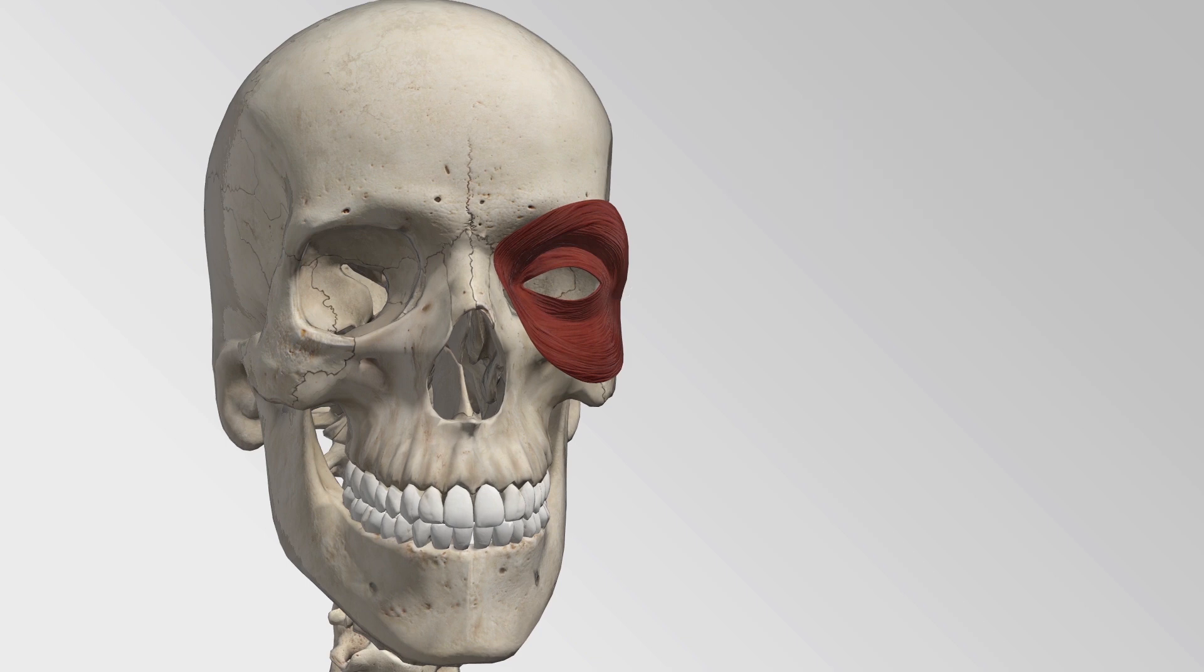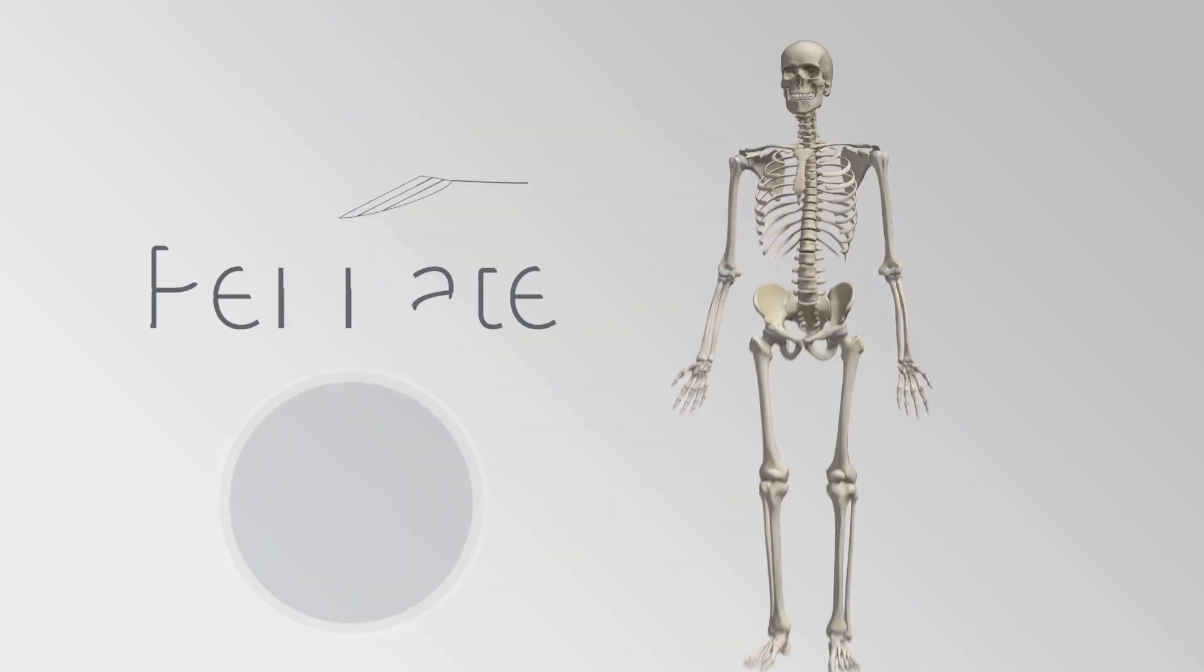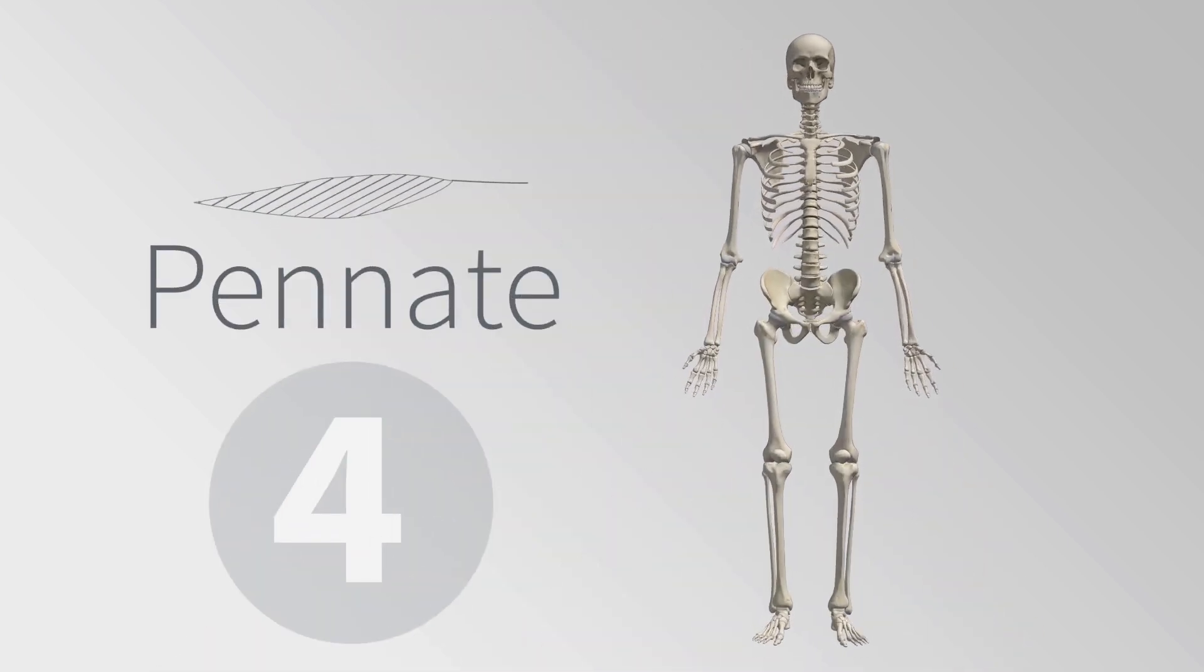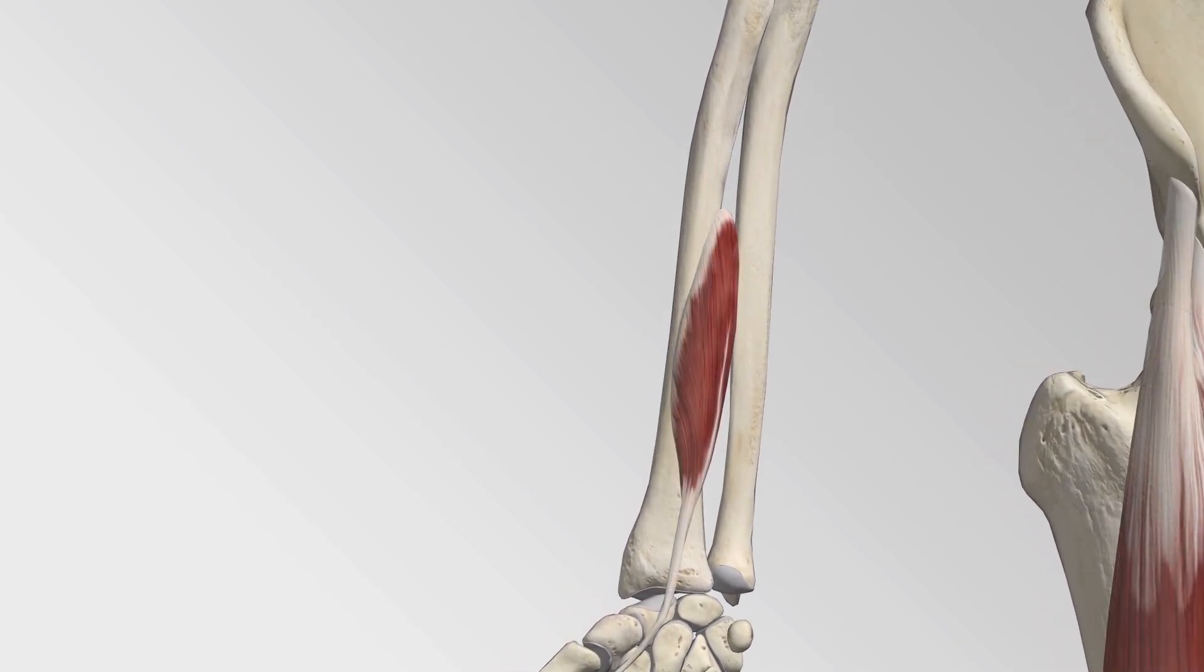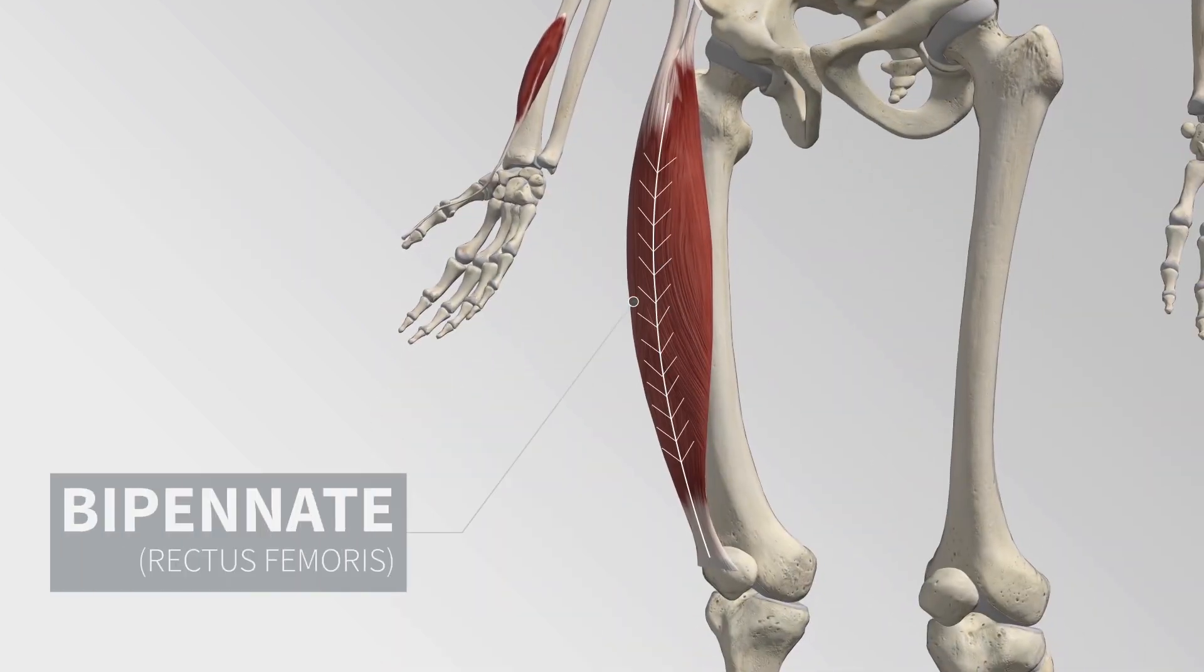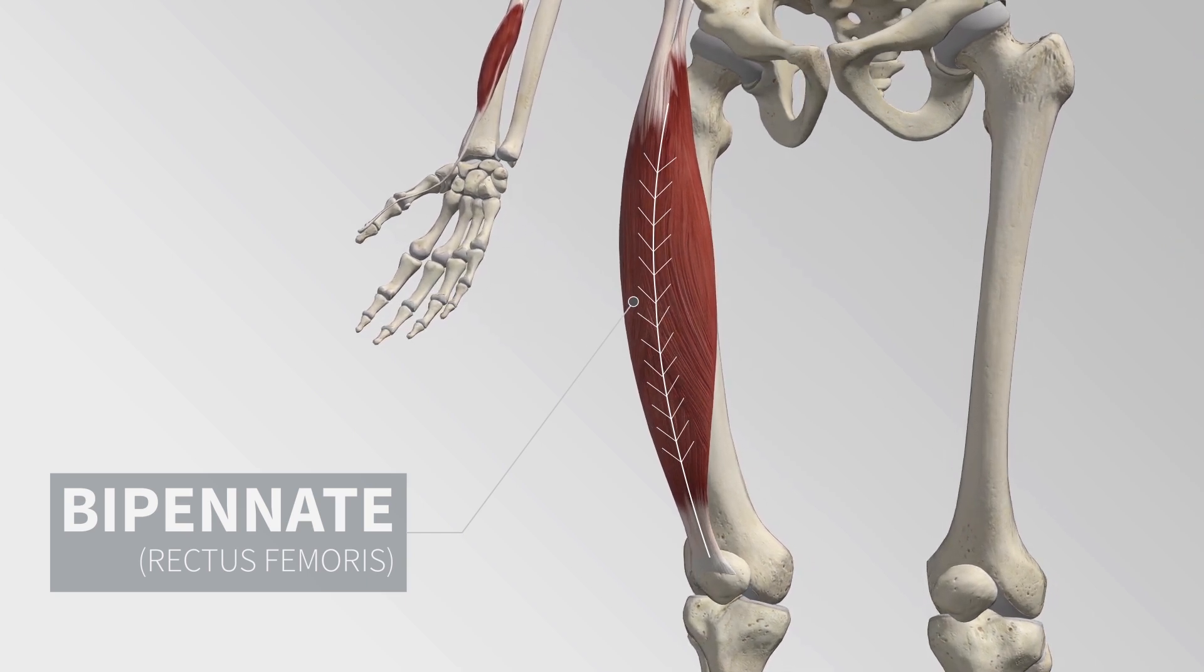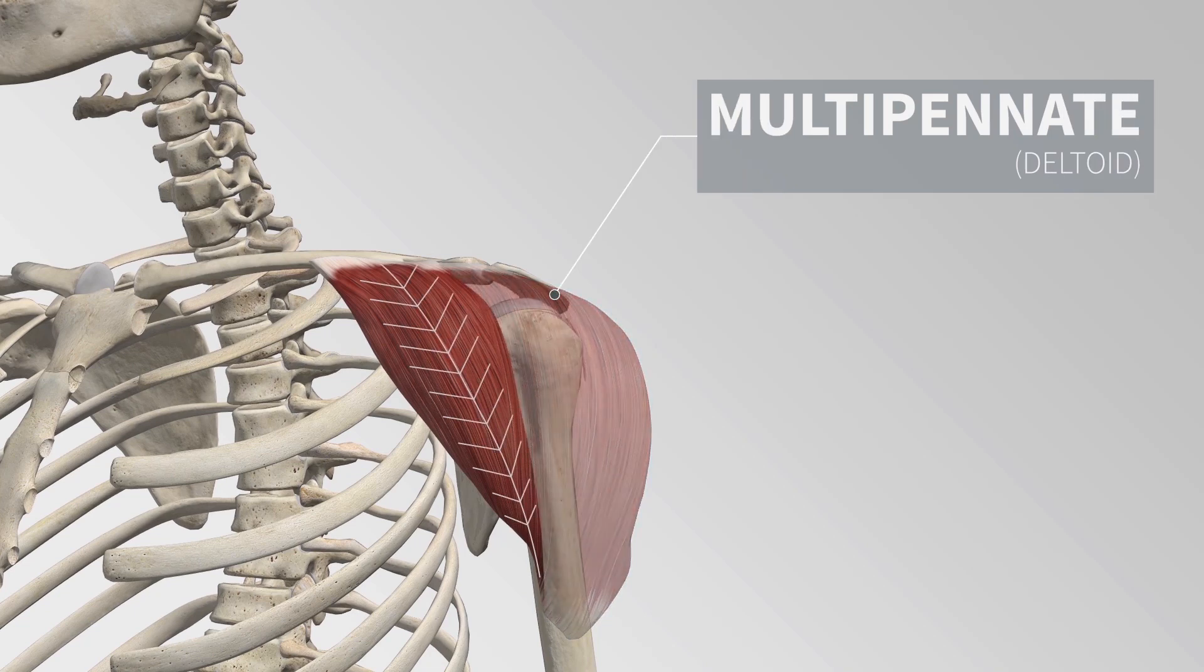Pinnate skeletal muscles consist of muscle fibers that are attached to the sides of a tendon in a manner that is similar to a feather. Pinnate muscles can be subcategorized based on their shape into unipinnate muscles, bipinnate, and multipinnate.